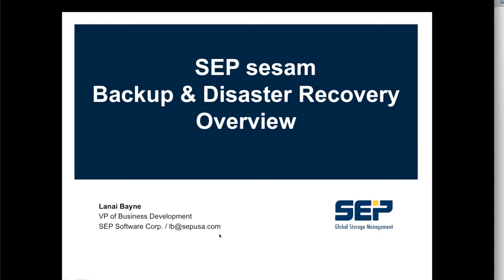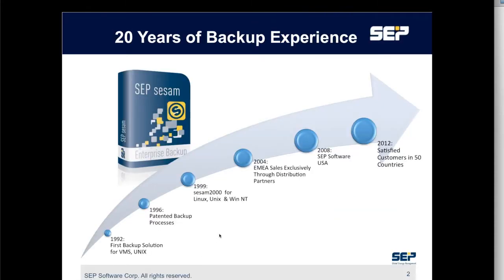Quick overview. SEP started about 30 years ago as a German-based company. We were in production automation software, and we were hired by Alcatel and IKEA to write some custom code to back up some of their mission-critical data in some of their warehouses. After a while, we realized that product was a very quick, easy, efficient product to use, and the decision was made to bring that to market. They actually split the companies about 20 years ago, and SEP Software was born. The software was completely rewritten from the ground up two times — once in 1996, and again just after 2001. About four and a half, five years ago, SEP was brought to the US, so fairly new to the US market, but gaining market share very quickly and growing quickly as well.